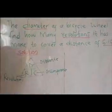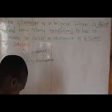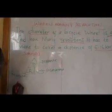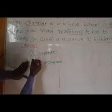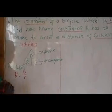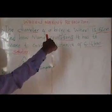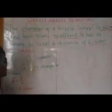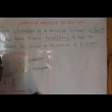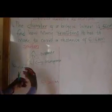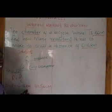The question states how many revolutions, so revolution equals D over C — distance over circumference. The distance given is 6.16 kilometers and the diameter given is 56 centimeters. You can see the units are different, so you need to make them the same unit. It is easier to change kilometers to centimeters.